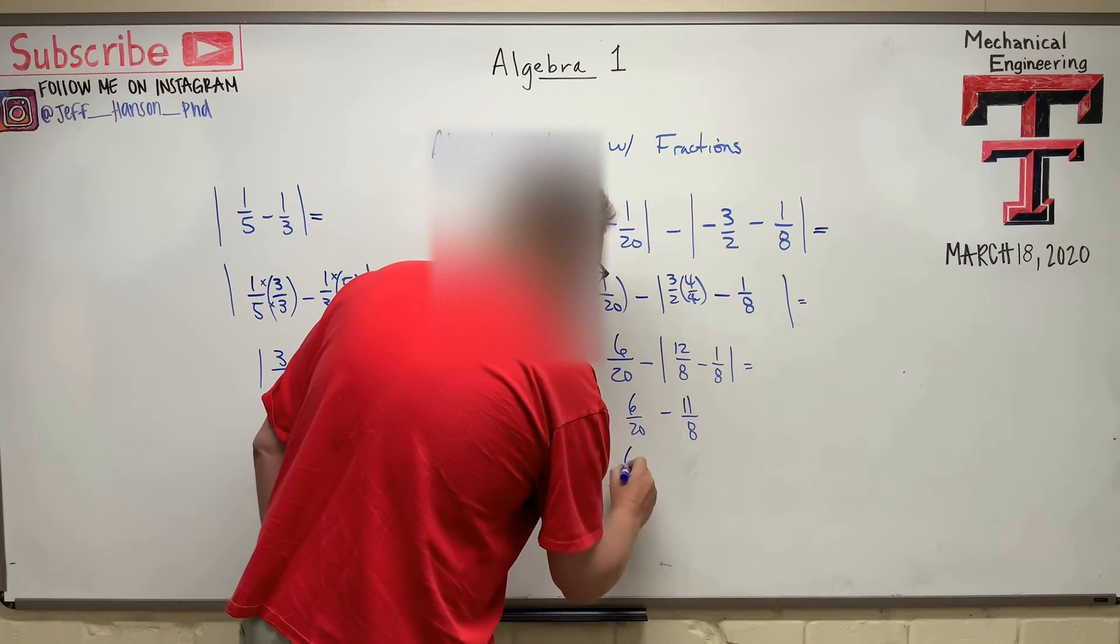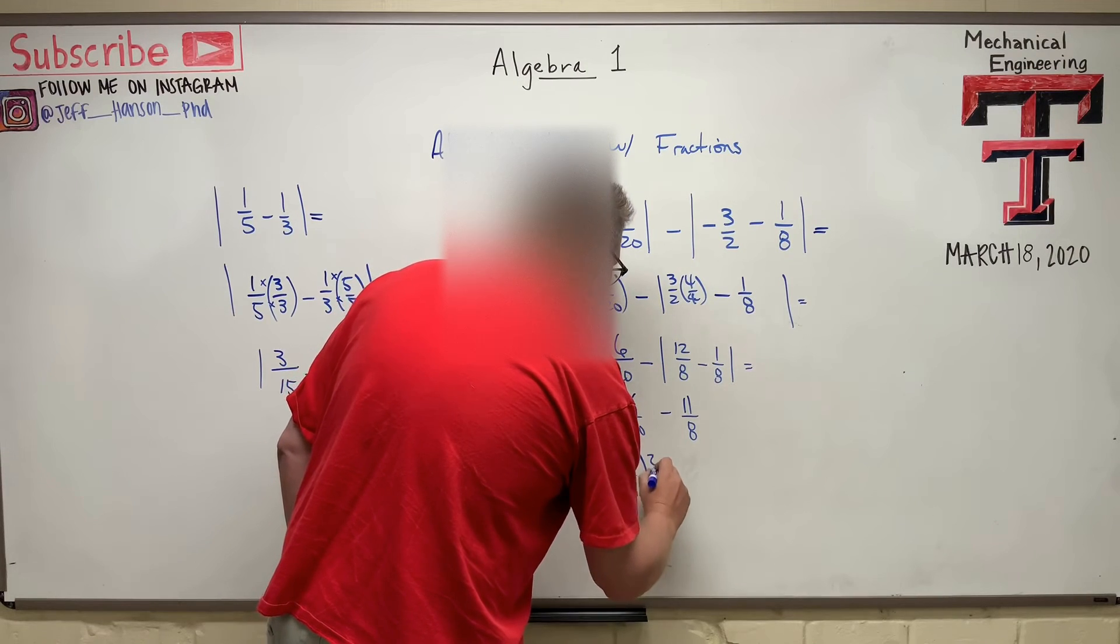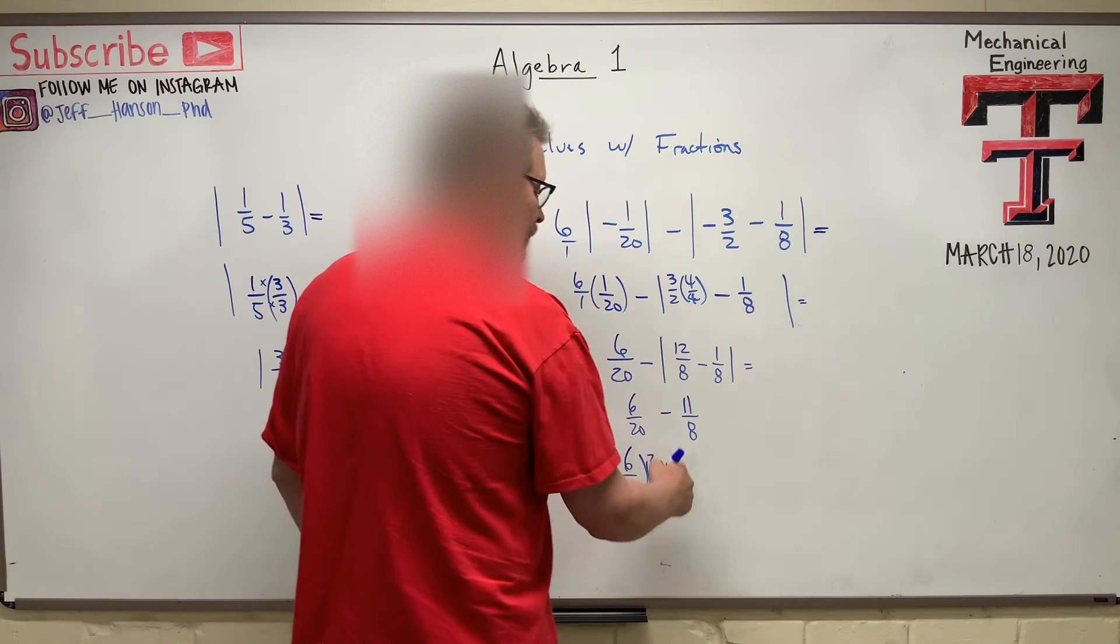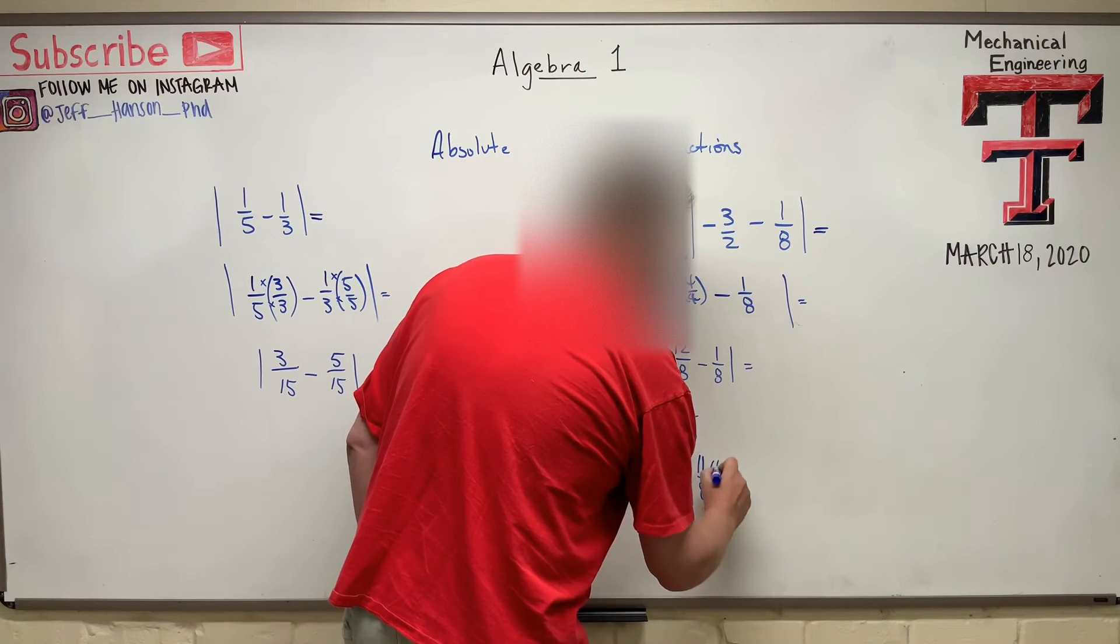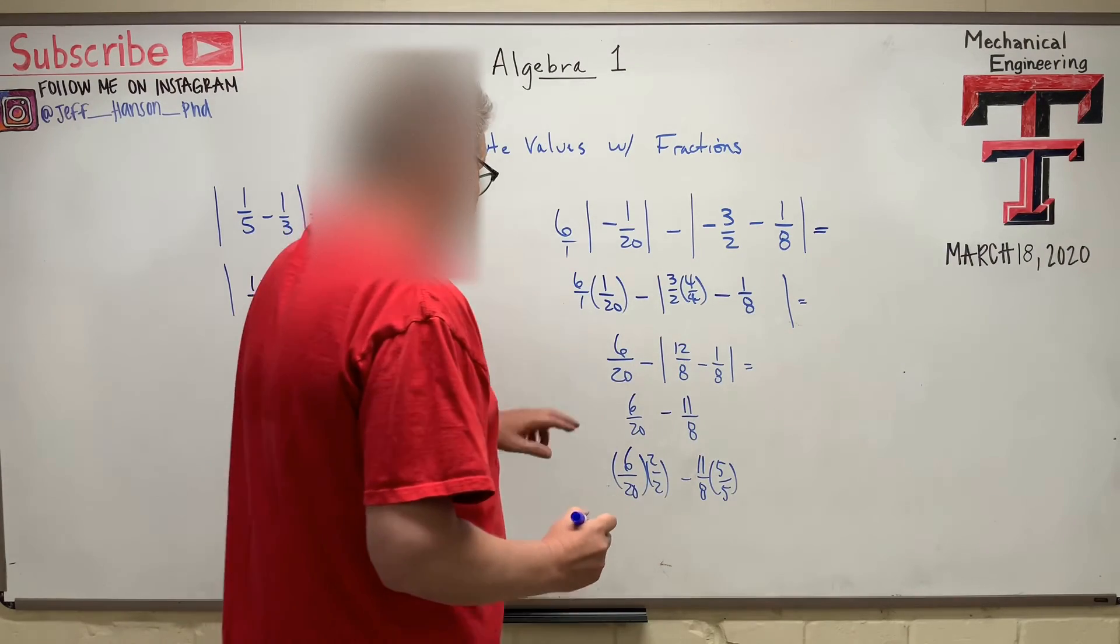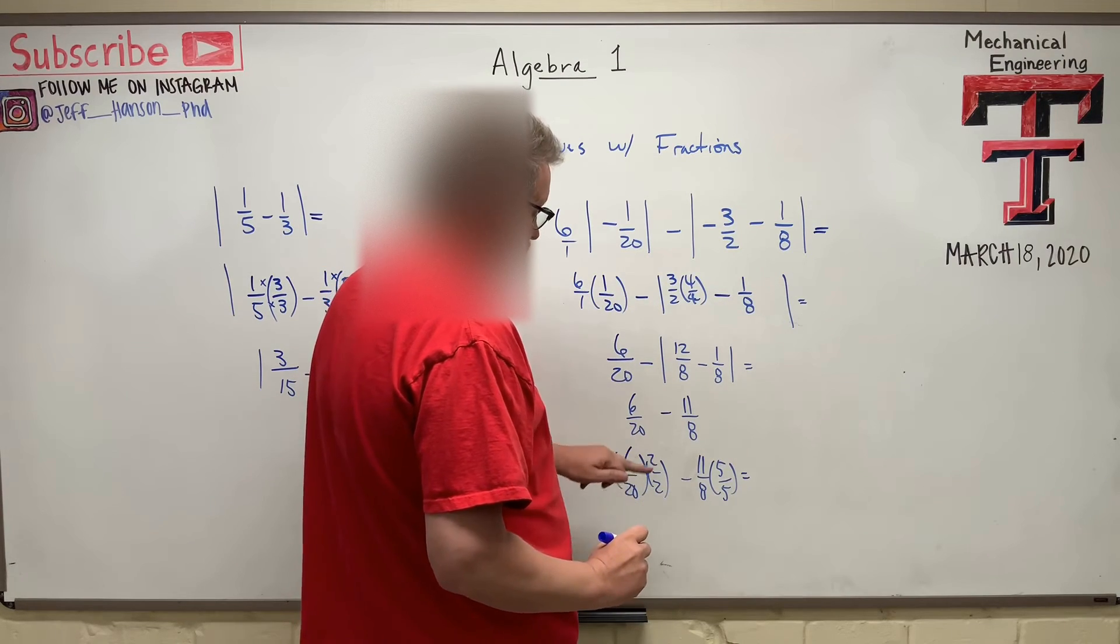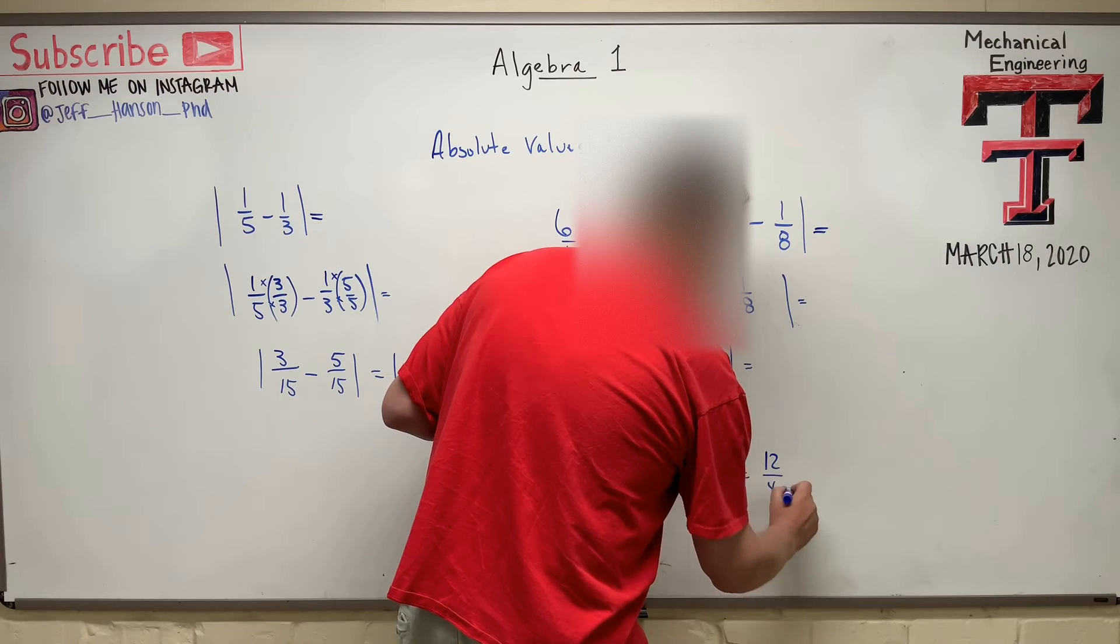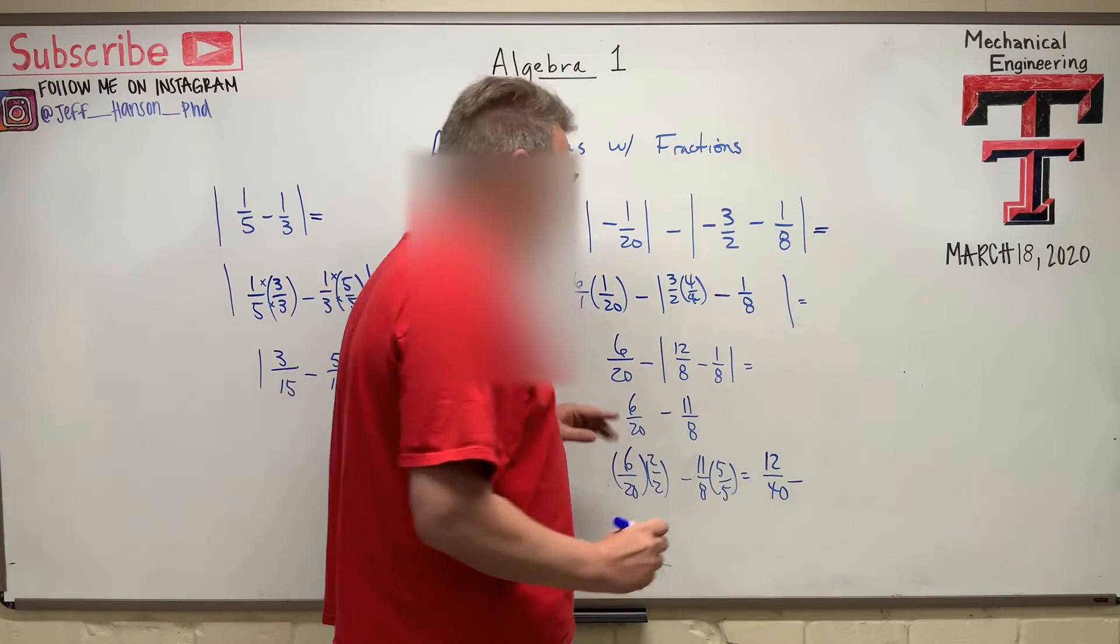So here we go. Let's turn that into a 40. That's a 6 over 20 times 2 over 2. Minus, get him into a 40. I've got to multiply by 5. 11 over 8 times 5 over 5. So what does that become? Oh my goodness. 6 times 2 is 12 over 40, minus 11 times 5 is 55 over 40.